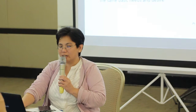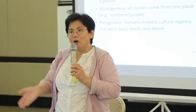Aside from picture books, you have traditional literature. These are the ones passed on from generation to generation through word of mouth, and then later someone thought of writing them down and they were published. Because they were passed on through oral tradition, there is no single known author — it's the communal authorship of a culture long ago.